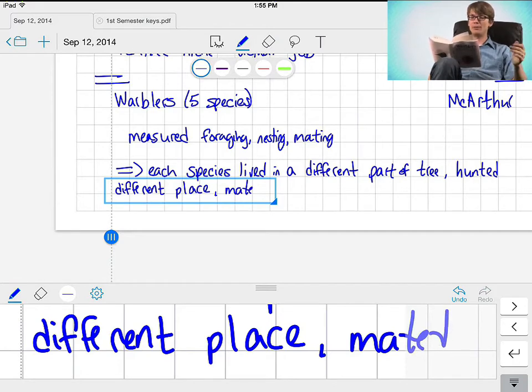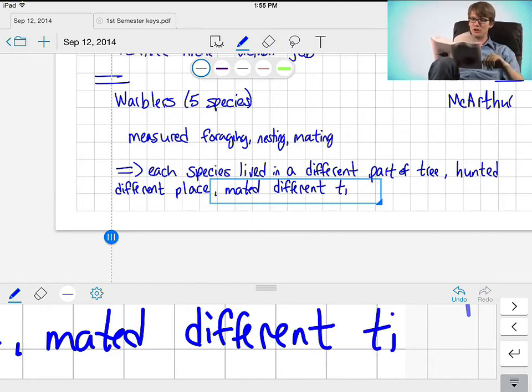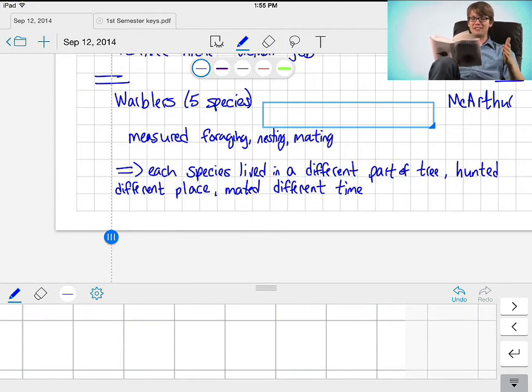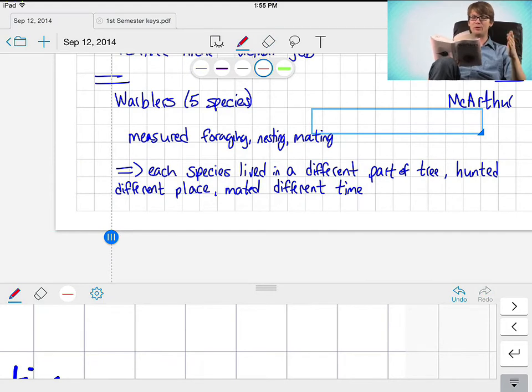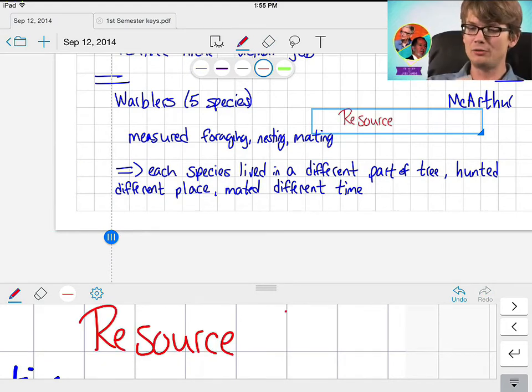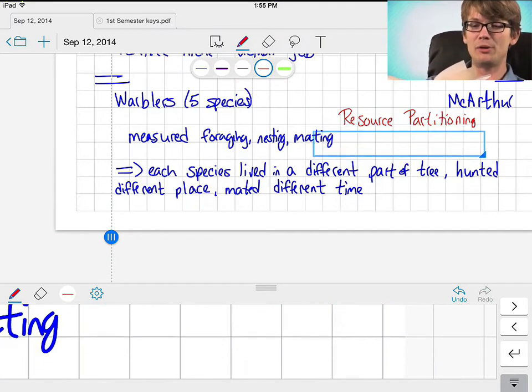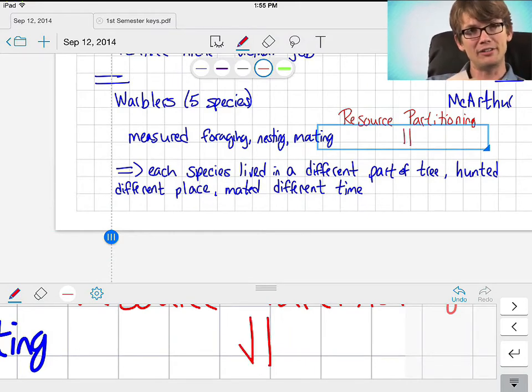Thanks in part to this discovery, MacArthur became known as a pioneer of modern ecology, encouraging curiosity and hypothesis-driven research, championing the use of genetics and ecological study and collaborating with biologists like E.O. Wilson and Jared Diamond. Sadly, he died of renal cancer at the age of 42, but his study of northern warblers remains a classic example of community ecology that is still taught today.